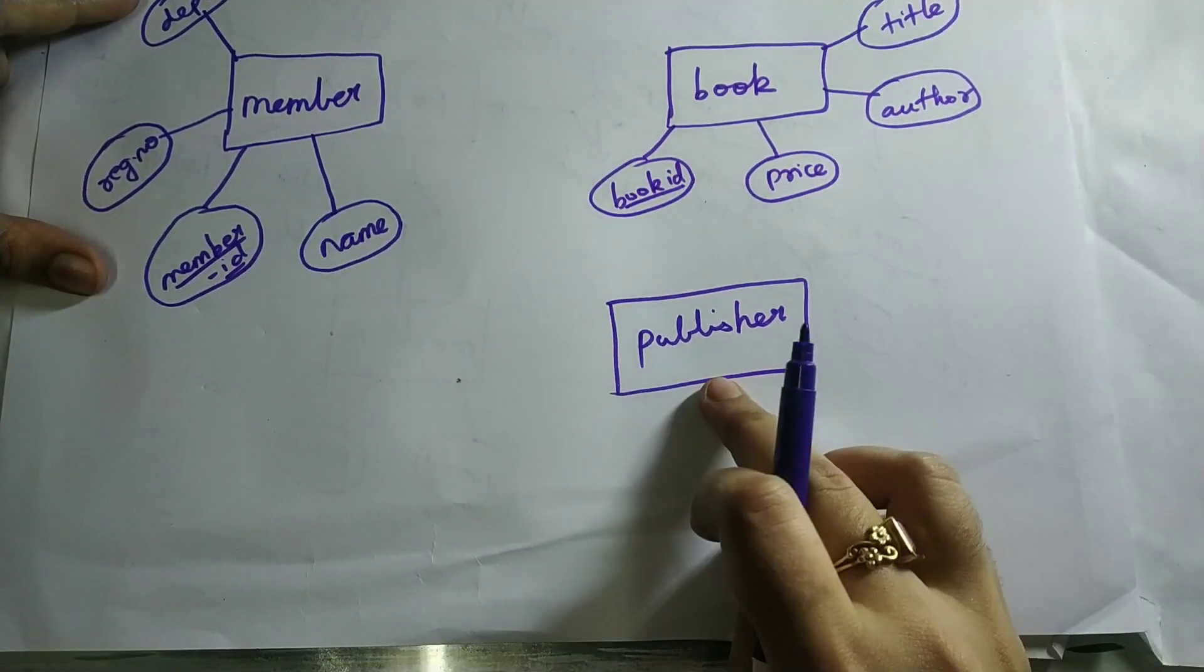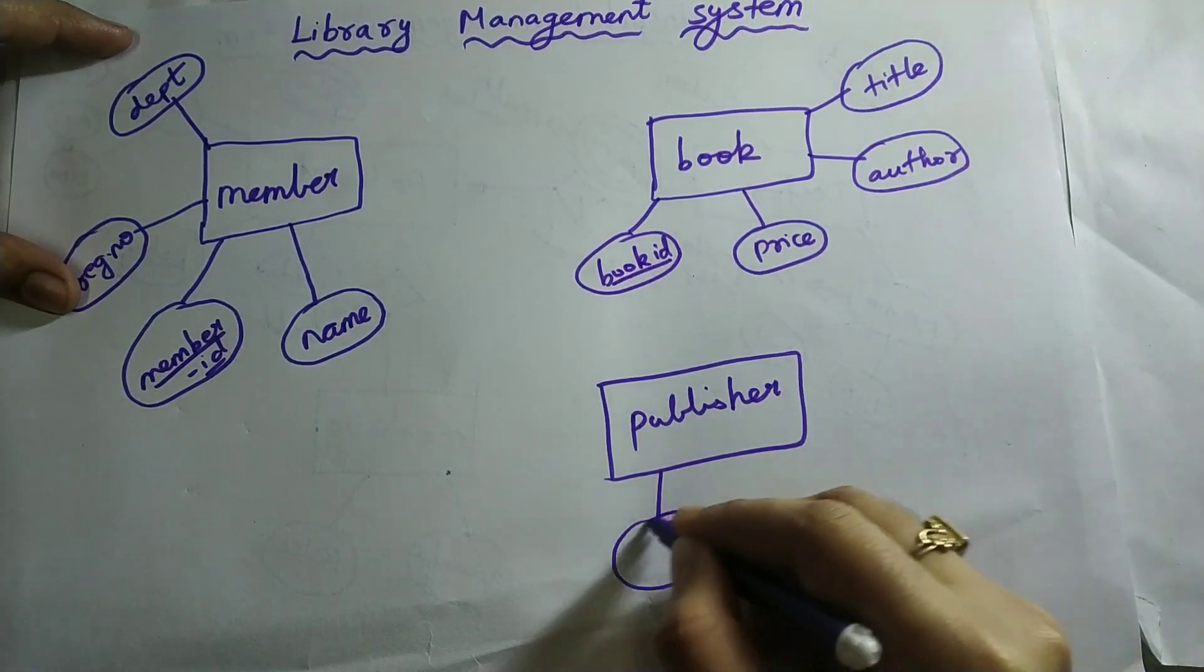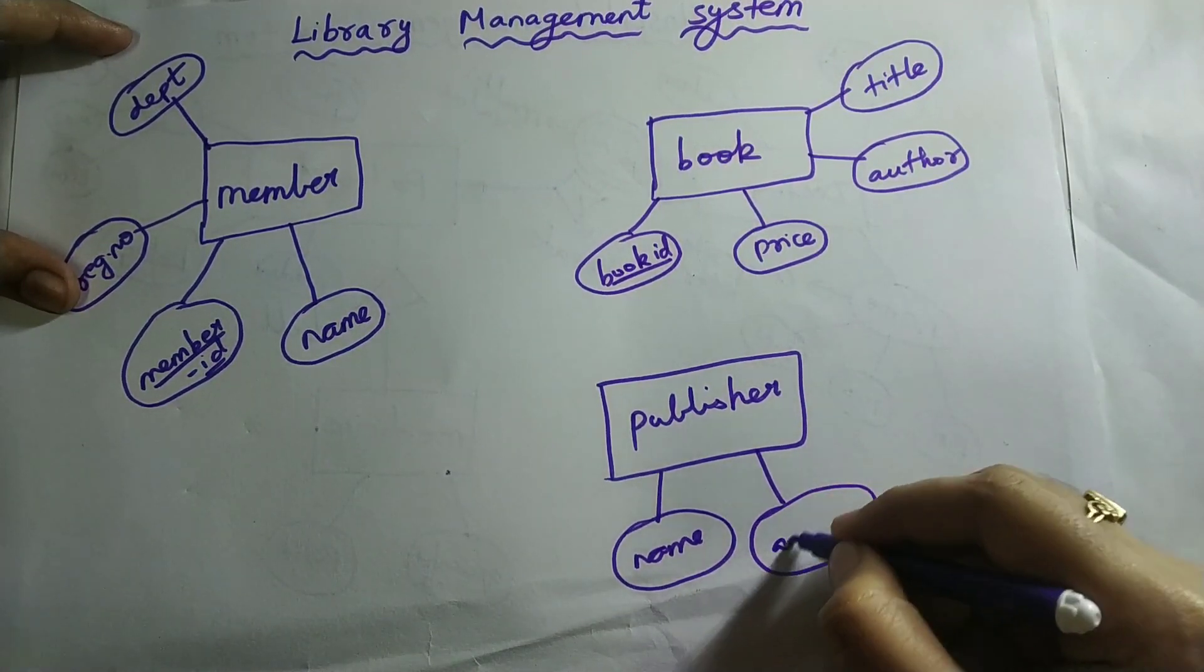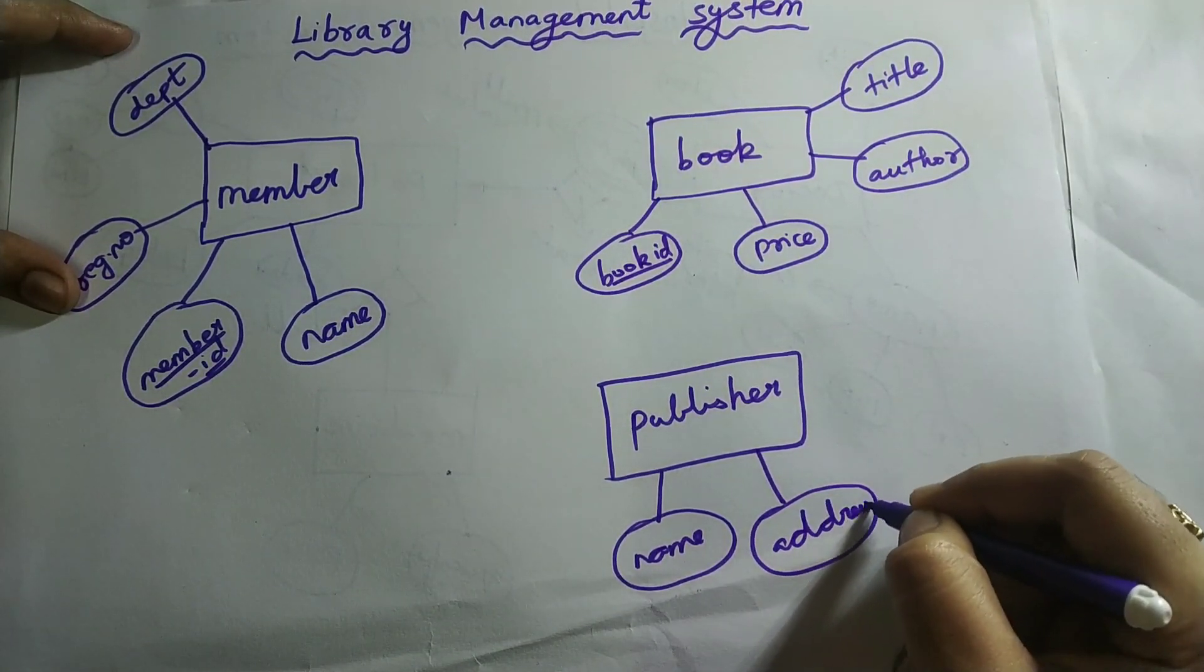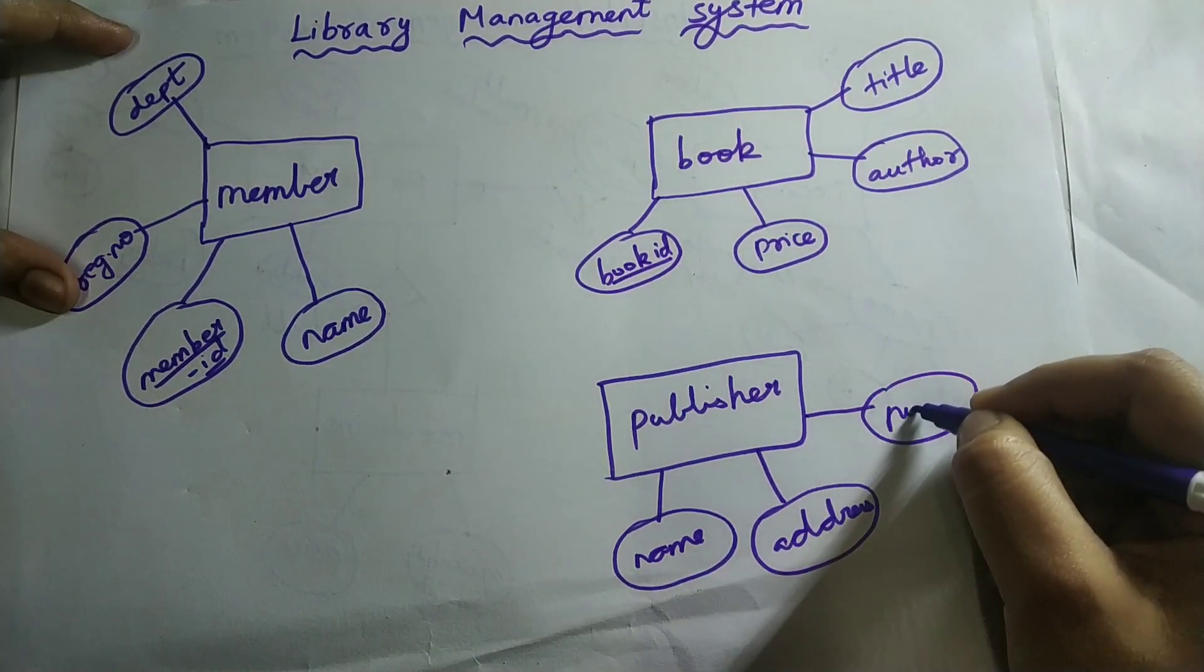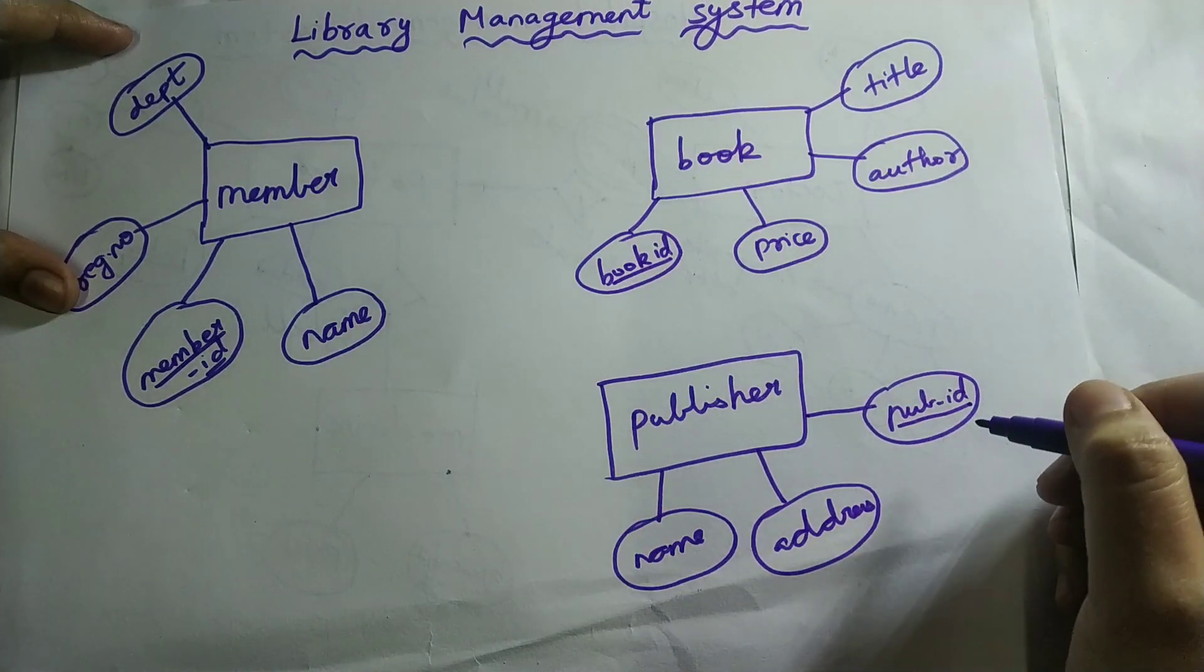Next, attributes of publisher. Publisher: name of that person, address of that person. Next, publisher ID also, which is unique for every publisher.